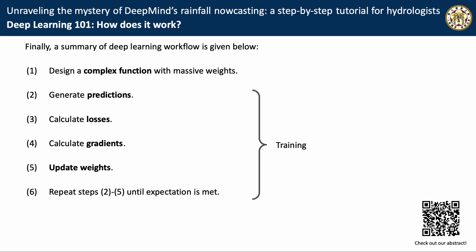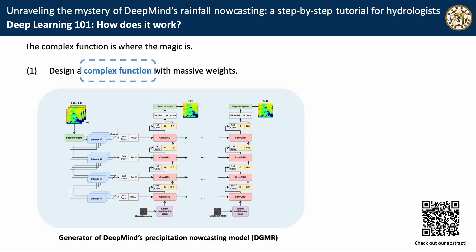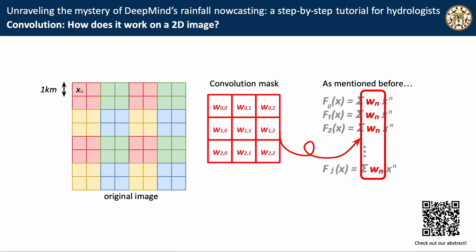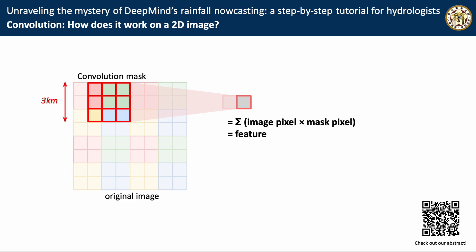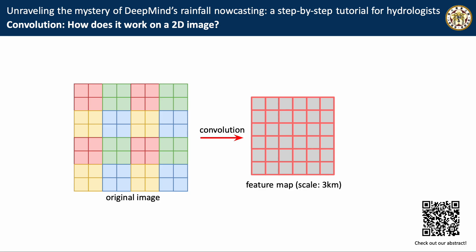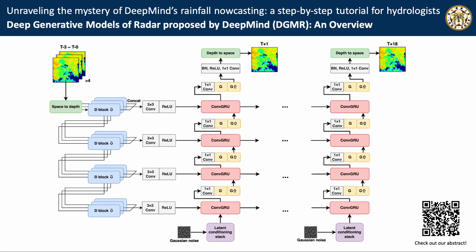Finally, we can conclude the workflow of deep learning, and the complex function is where DeepMind does their magic. Let's see how convolution works next. Assume a two-dimensional image and a convolution mask with weights that are yet to be updated. Doing convolution is to multiply the bounded pixel's value from the image and the weight of the convolution mask, then sum these pixel values up. This operation can be regarded as extracting spatial features in a scale of 3. After repeating this operation, we get a feature map. Now the basic concepts of deep learning are explained.